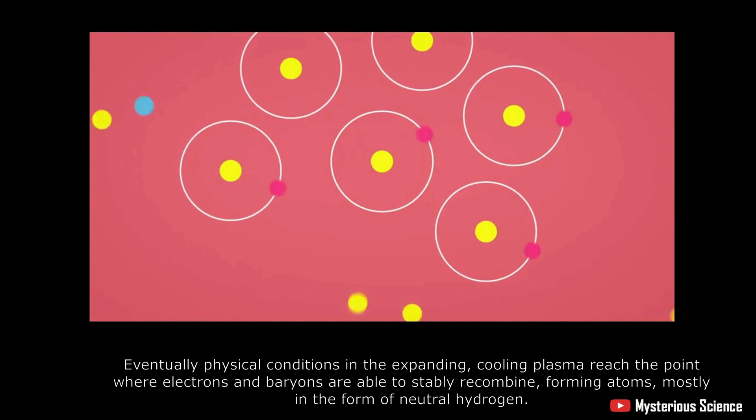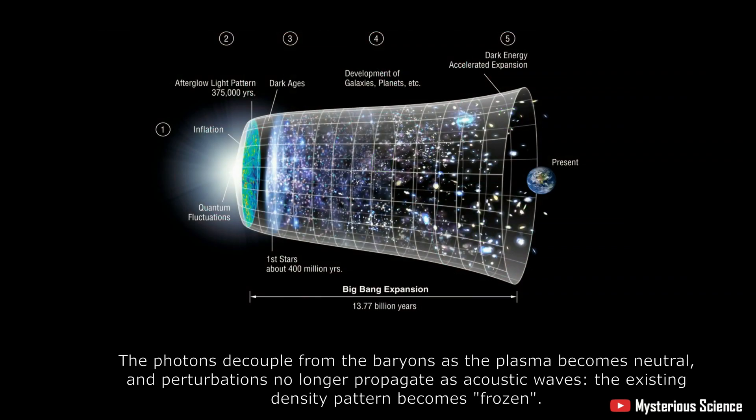3. The photons decouple from the baryons as the plasma becomes neutral, and perturbations no longer propagate as acoustic waves. The existing density pattern becomes frozen.